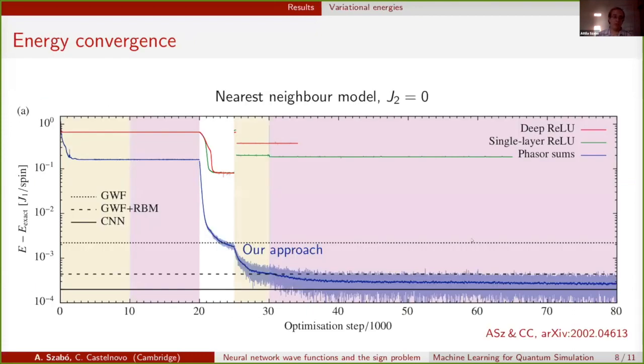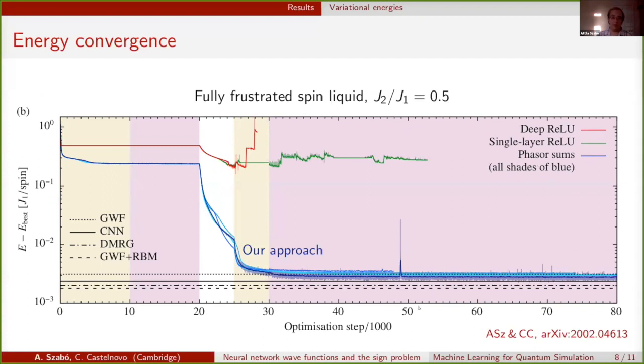Just to show some computational results, this is the evolution of the variational energy in the nearest neighbor model. This part is the first stage where we only optimize the phases, so we end up with some variational energy. If we turn on the amplitude optimization, we quickly reach a state-of-the-art variational energy, both in the nearest neighbor case and also in the fully frustrated case. I've put up some of the better-known state-of-the-art variational approaches. We can see that our technique ends up in the same ballpark in terms of energy difference from the true ground state energy.